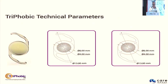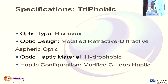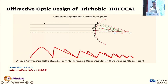It's a single-piece cast-molded lens. The geometry of the lens is a 6-millimeter optic with a 13-millimeter total size and a 4-millimeter diffractive zone. The toric marks are aligned with the haptic-optic junction. It has a diffractive surface profile — a biconvex lens with a modified refractive aspheric optic. The material is hydrophobic with a C-loop haptic. The A constant is 119 with a refractive index of 1.53. Haptic angulation is zero, available from 0 to 35 diopters in 0.5 increments. The delivery system is disposable.